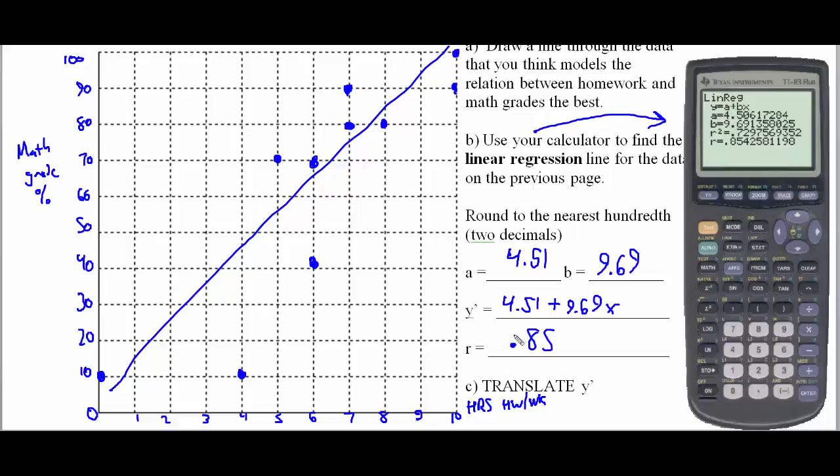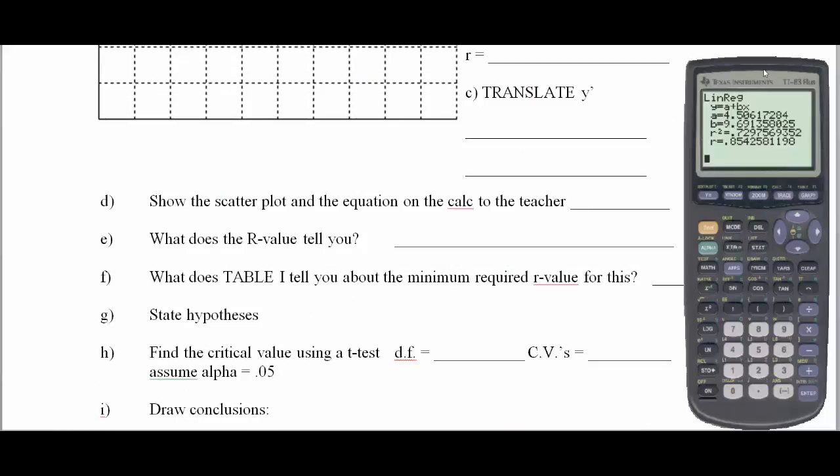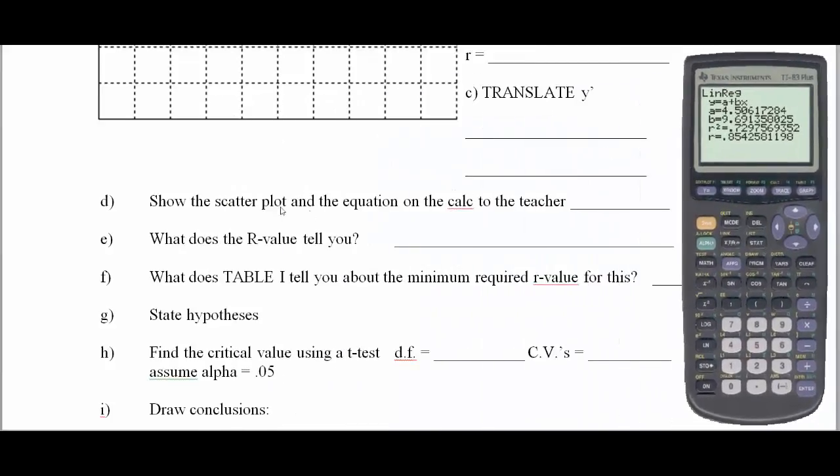This is definitely going to be a positive line. For a question similar to that, just have to draw a line that best fits the data. It's going to be straight, it's not going to connect the dots and make a zigzag pattern. We've done part B to find our linear regression line. The A is going to be 4.51, the B is going to be 9.69. The Y prime line, or the line of best fit, is 4.51 plus 9.69X. And the R in this case is 0.85.